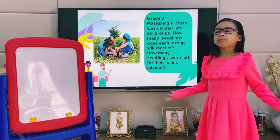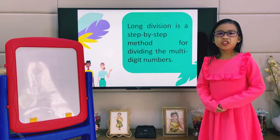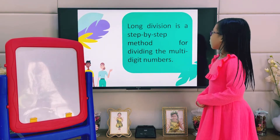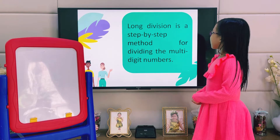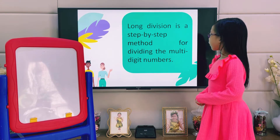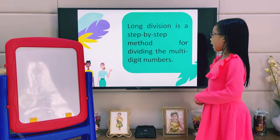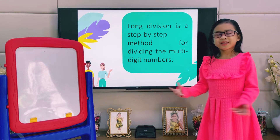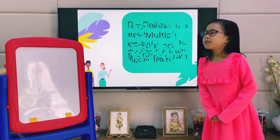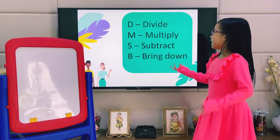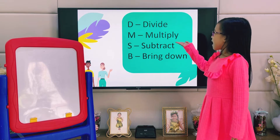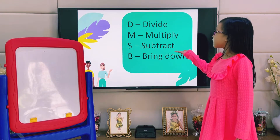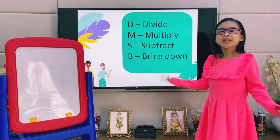We will be using the long division method. Long division is a step-by-step method for dividing multi-digit numbers. It involves D, M, S, B: D — Divide and Multiply, S — Subtract, B — Bring down.